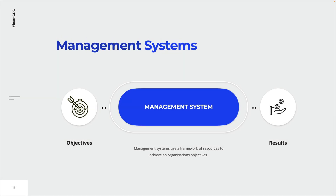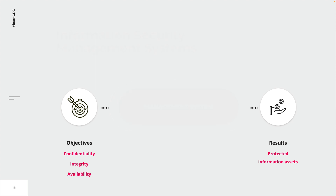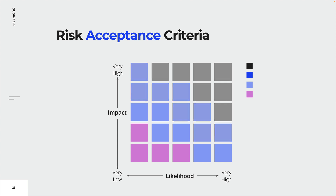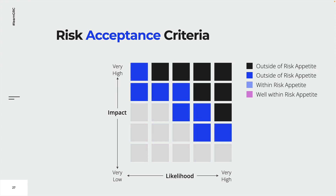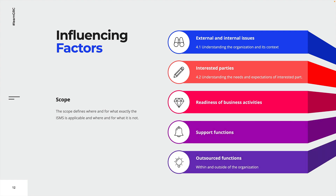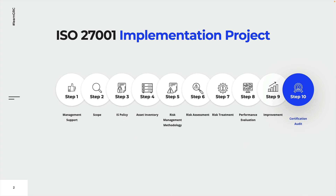In this course, you will learn how to implement an information security management system that complies with the ISO 27001 standard. We will dive into the requirements of each clause and deliver a brief explanation in combination with practical implementation guidance. The order of the lectures is based on a generic 10-step approach which will allow you to apply your knowledge in no time.